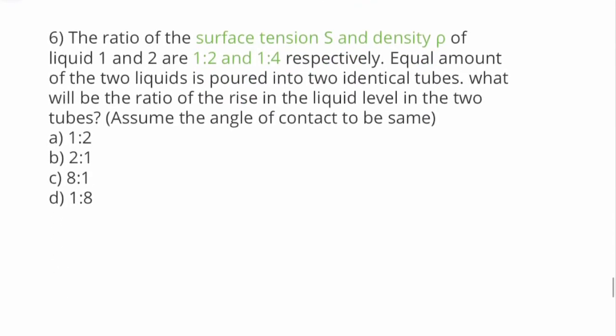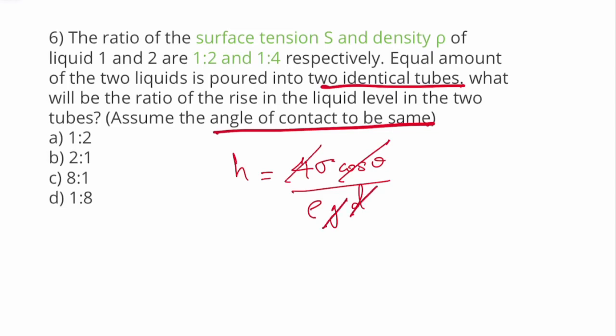The ratio of surface tension s and density ρ of liquid 1 and 2 are 1:2 and 1:4. Equal amount of 2 liquids is poured into identical tubes. What will be the ratio of rise in liquid level in the 2 tubes? Assume the angle of contact is also same. Angle of contact is same, diameter is same. What varies is surface tension and density.